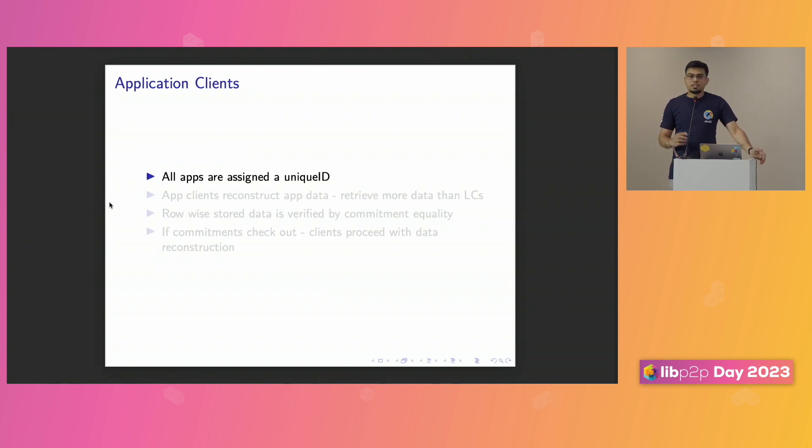And the light clients compute the block confidence, as I mentioned. The data is uploaded to the DHT and then they signal the application client that the block has been verified. Now, what do these application clients do? Basically, we want to make sure that these base chains keep the data for multiple rollups. And these rollups want to have a particular application ID against which they submit the data. Otherwise, to retrieve the entirety of the data, they would have to download the full block. In order to avoid that, we create a unique ID. And the app clients reconstruct the application data, but they cannot just download all the cells because potentially it can be a large amount of cells.